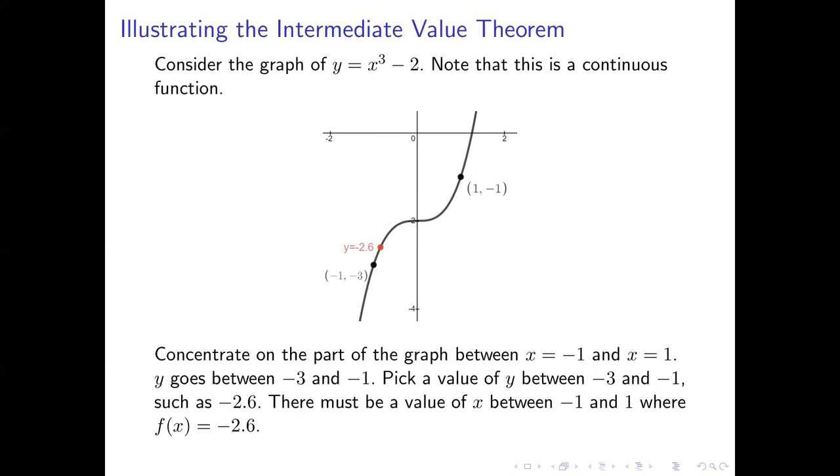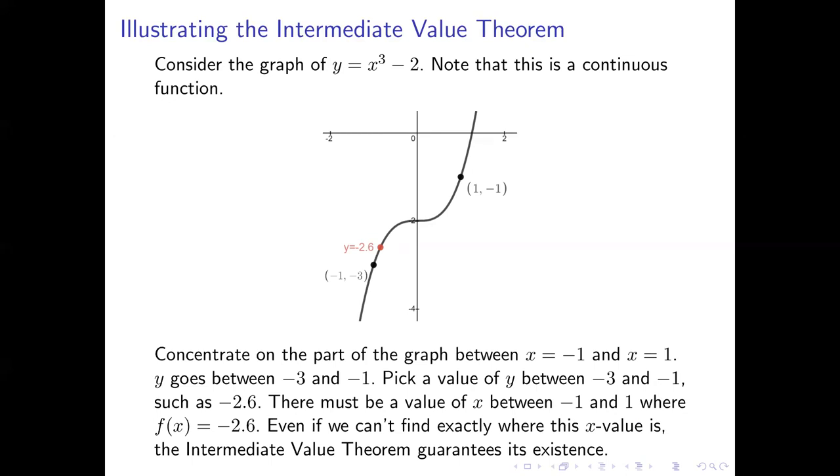It's sort of obvious from looking at the graph, but the intermediate value theorem allows us to avoid having to rely on a graph when we are working with this sort of thing. Now one thing the intermediate value theorem does not allow us to do is find the x value we're looking for. We know that there must be one, but the intermediate value theorem doesn't necessarily give us a way to find it. All the intermediate value theorem guarantees is that there is such a number.